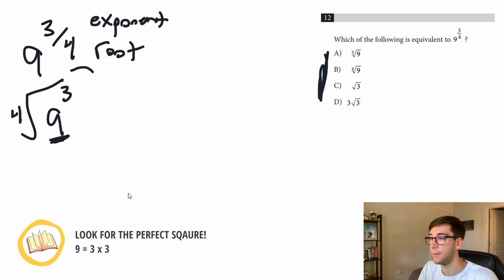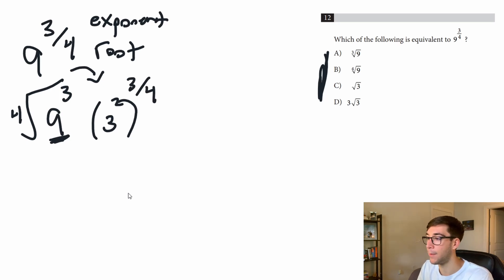So instead of going right to this, let's do 3 squared to the 3 fourths. The rule here is if you have a power raised to a power, you multiply the exponents.